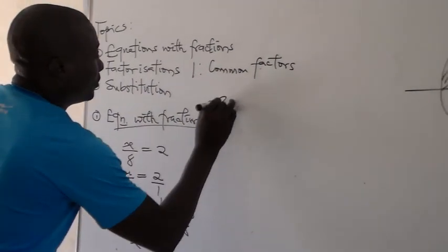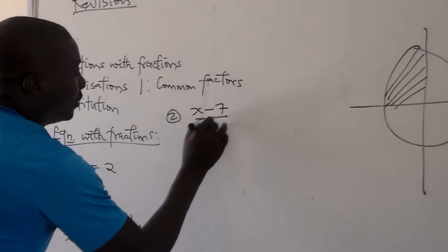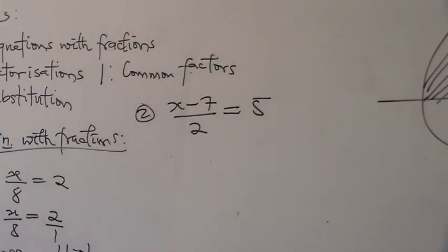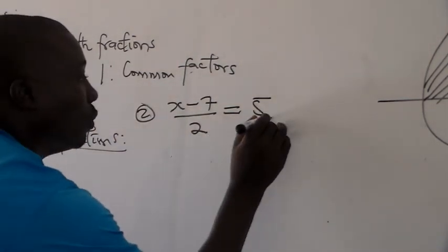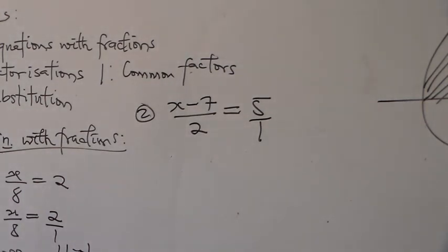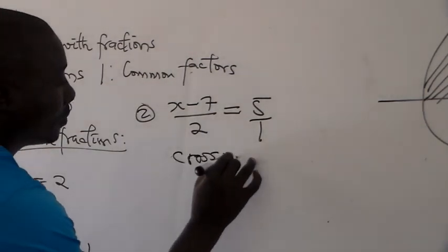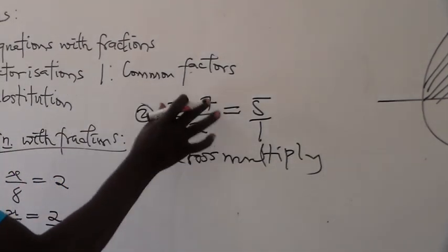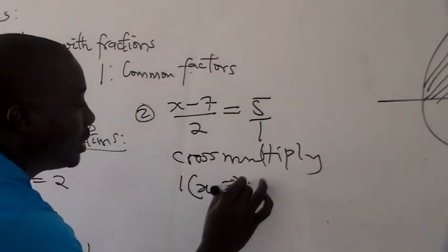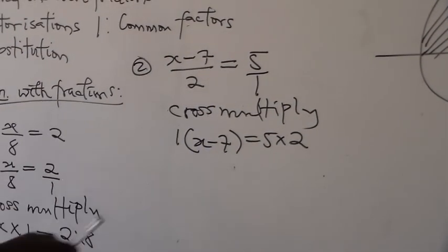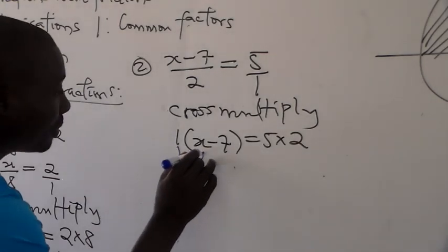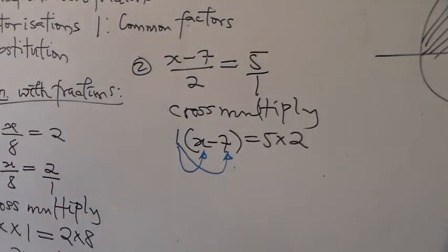Let's look at the second example. We have x minus 7 over 2 is equal to 5. Just as I explained while solving the first one, on the left-hand side we have a fraction; on the right-hand side we have just a whole number. We can make this 5 over 1 so that both become fractions, and then we cross multiply. So that we have 1 times (x minus 7) equal to 5 times 2. We use the 1 outside to open the bracket.